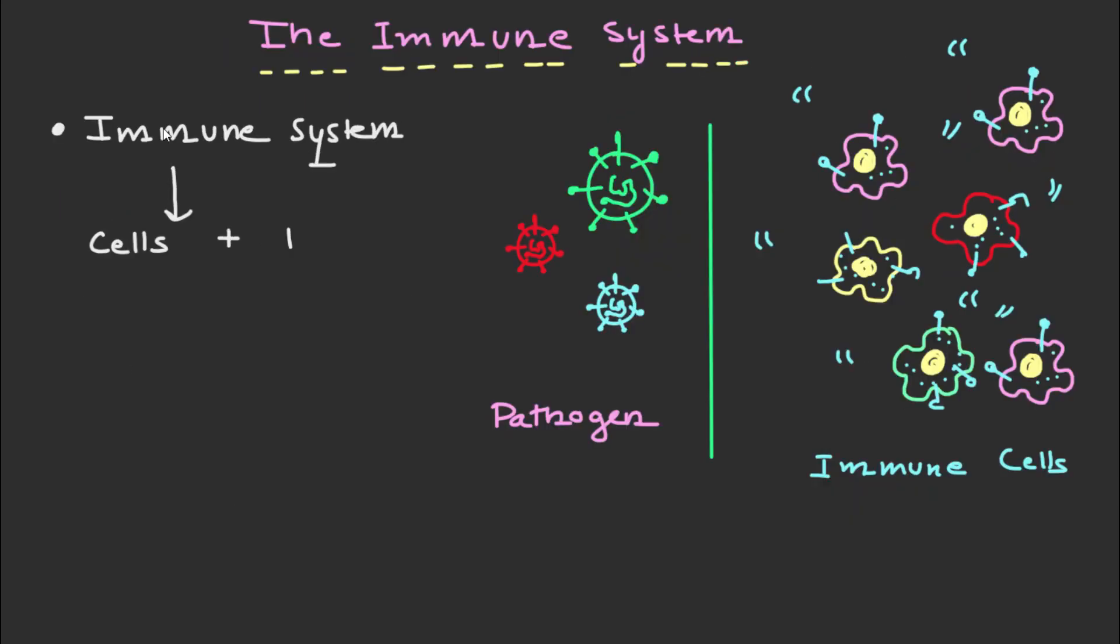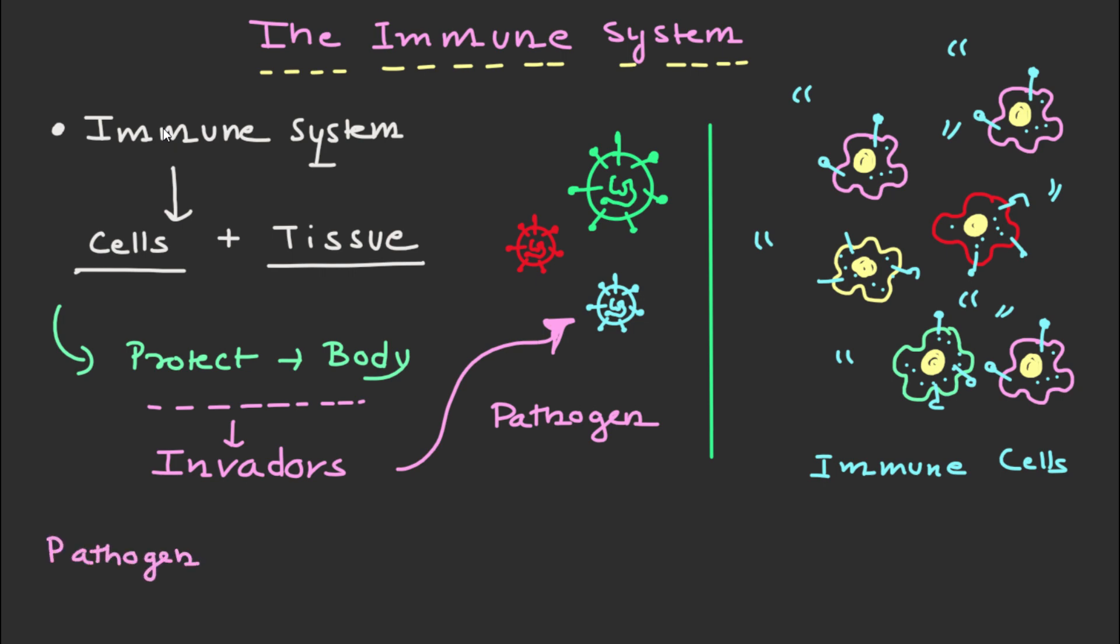Let's start with some basic biology. The immune system is a complex network of cells, tissues, and organs that work together to protect our body from foreign invaders such as bacteria, viruses, and parasites. When an invader enters our body, the immune system mounts a defense called an immune response to eliminate the threat.